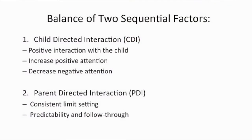PCIT is basically a balance of two sequential factors: child-directed interaction, or CDI, and parent-directed interaction, or PDI. The CDI portion incorporates positive interactions with the child — its design is to increase positive attention and decrease negative attention. The PDI portion consists of limit setting, predictability, and follow-through.